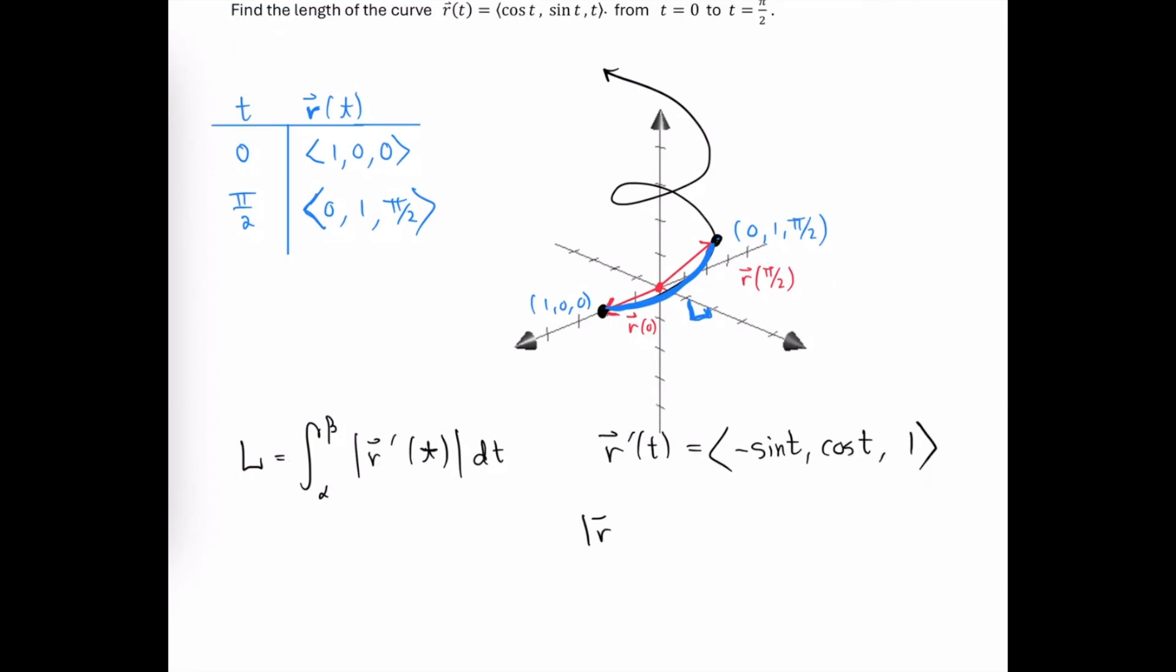Then, to determine the magnitude of that derivative function, we need to square the individual components, add them together, and then take the square root. So that's going to be sine squared t plus cos squared t plus 1,